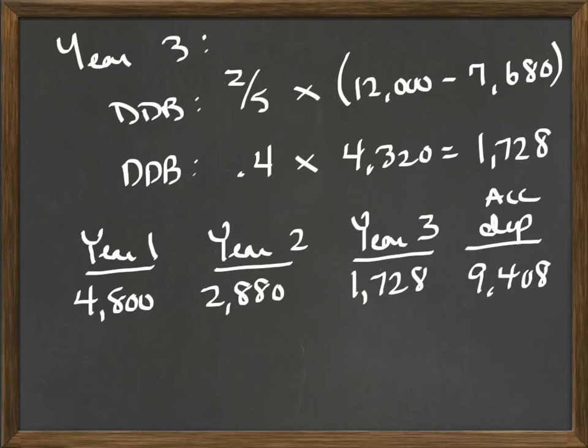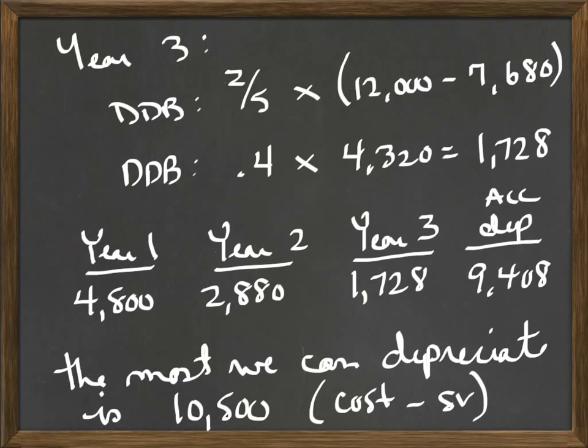You may be wondering why we keep calculating accumulated depreciation. We always need it to calculate the next year's depreciation. But also, any time you're depreciating an asset — and it's especially true in double declining — we cannot over-depreciate. In this example, $10,500 is the most we can have in accumulated depreciation. The highest balance you can have in accumulated depreciation always equals your depreciable base, or depreciable cost. Depreciable cost is always the cost of the asset minus the salvage value. So 12,000 minus 1,500 gives us $10,500. That's the most we can depreciate. Once accumulated depreciation hits $10,500, we have to stop depreciating the asset.